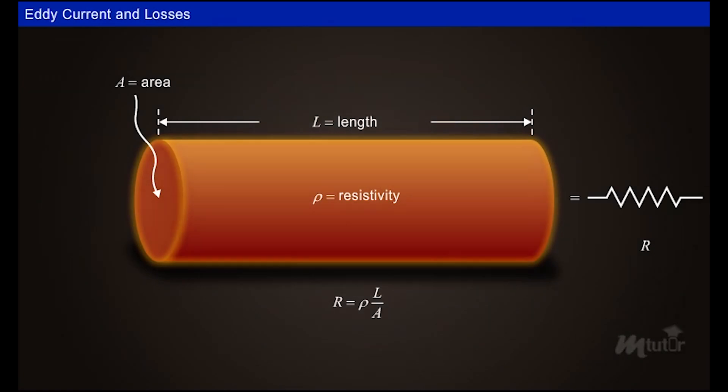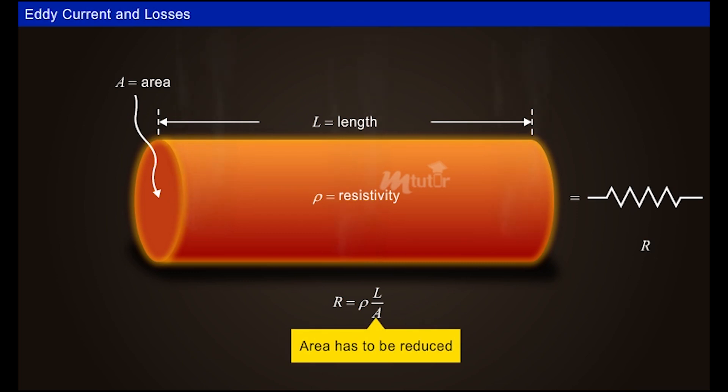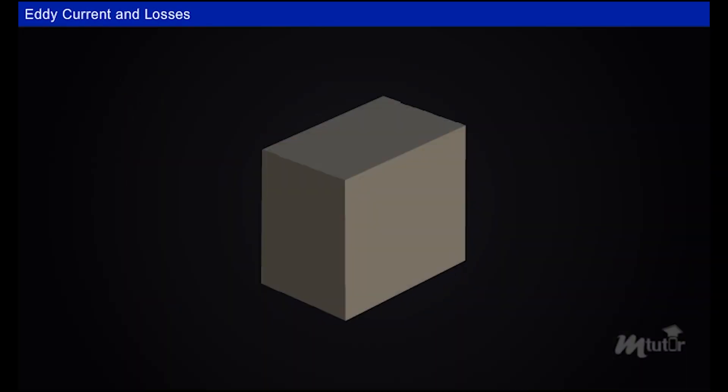These eddy currents create resistive losses in the rotor which are transformed into heat. The power loss due to this is called eddy current loss. It is obvious that if the cross-sectional area of the eddy path is reduced, eddy current losses will also be less.